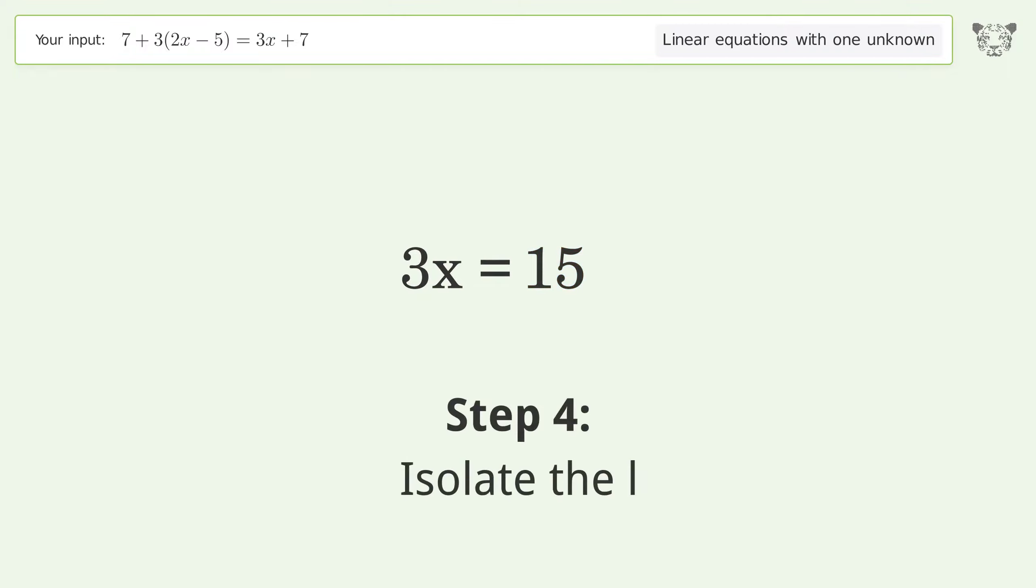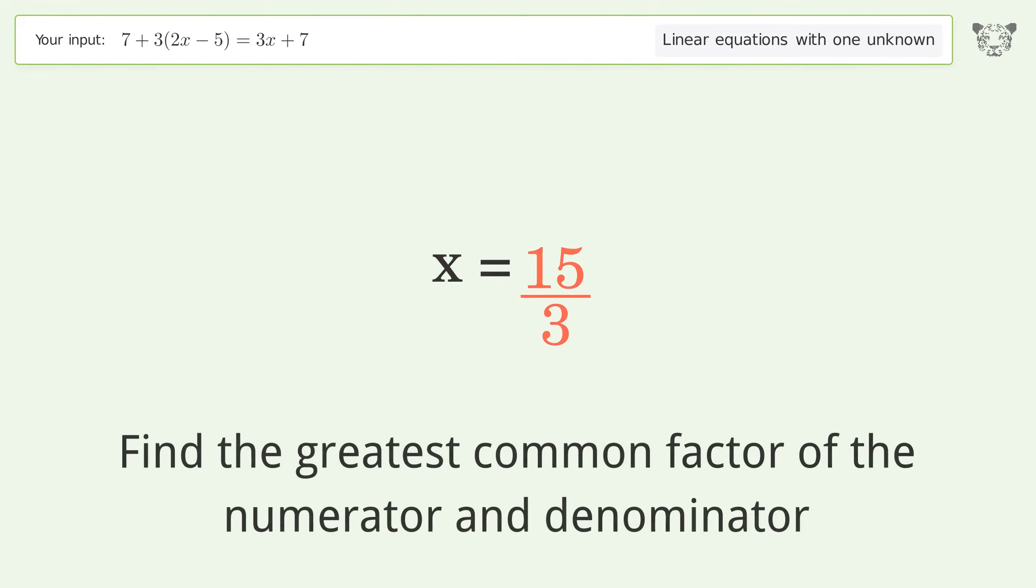Isolate the variable by dividing both sides by 3. Simplify the fraction and find the greatest common factor of the numerator and denominator.